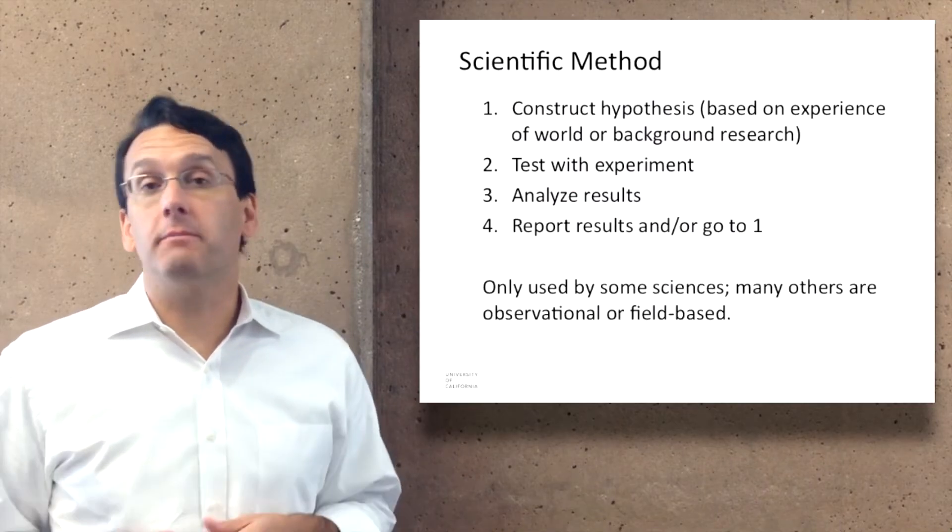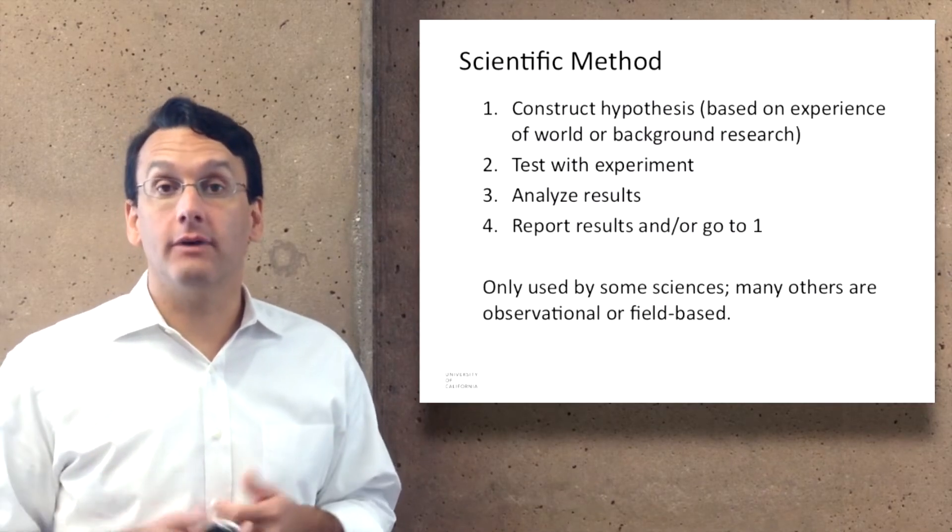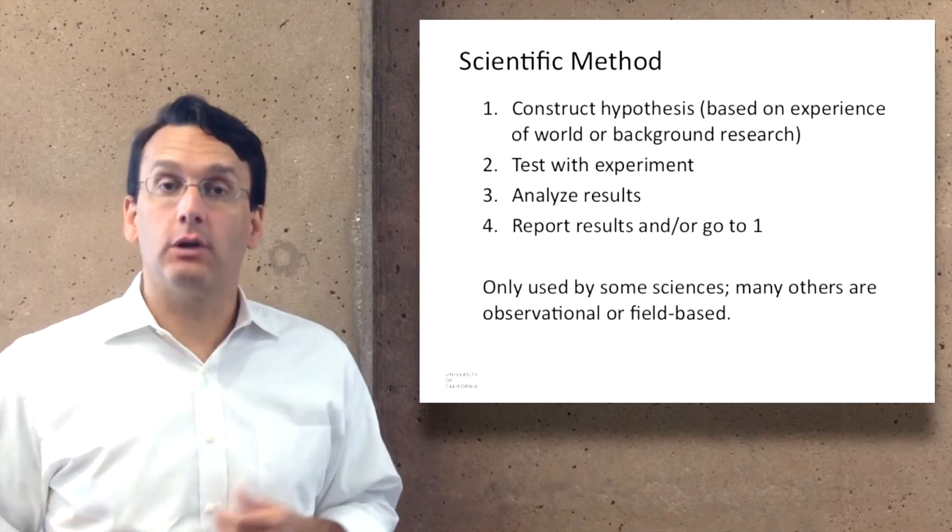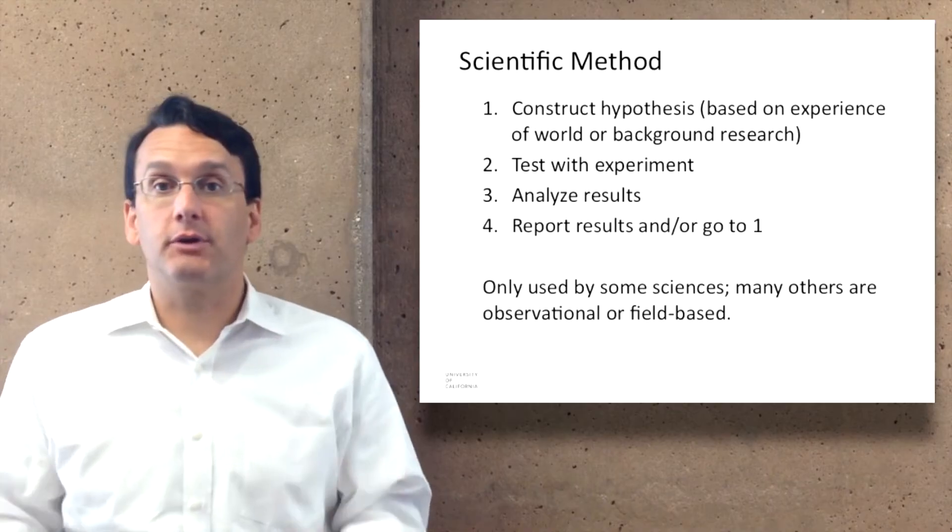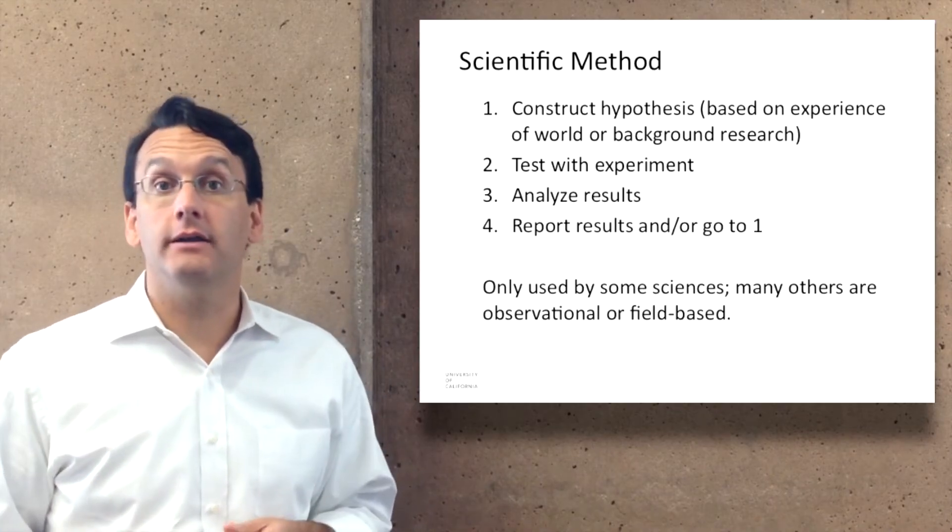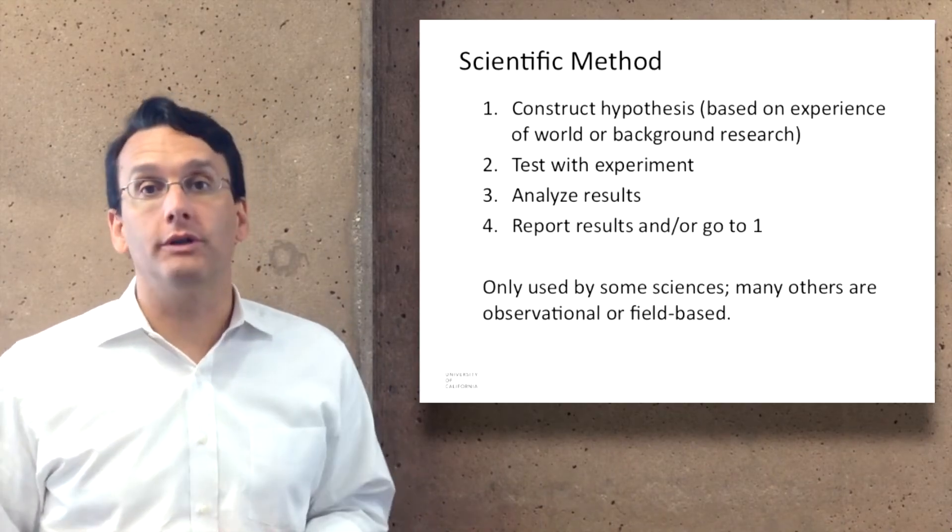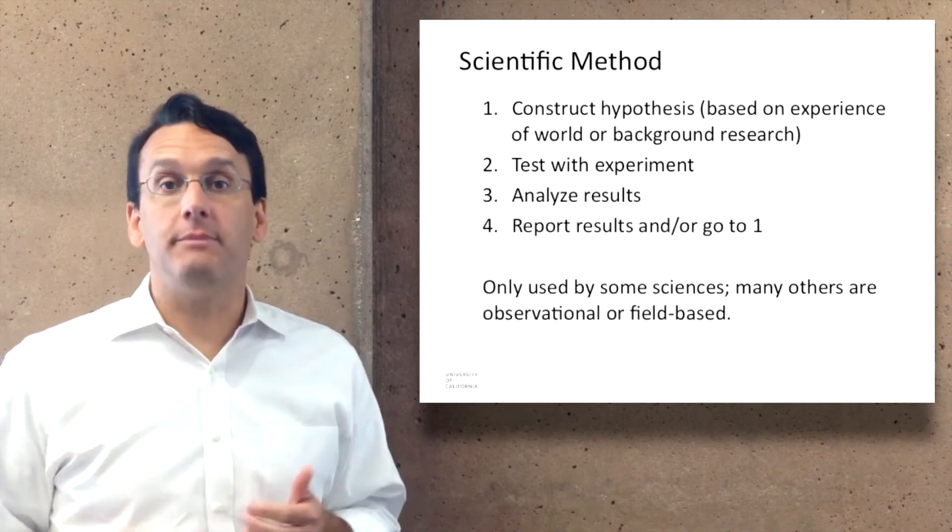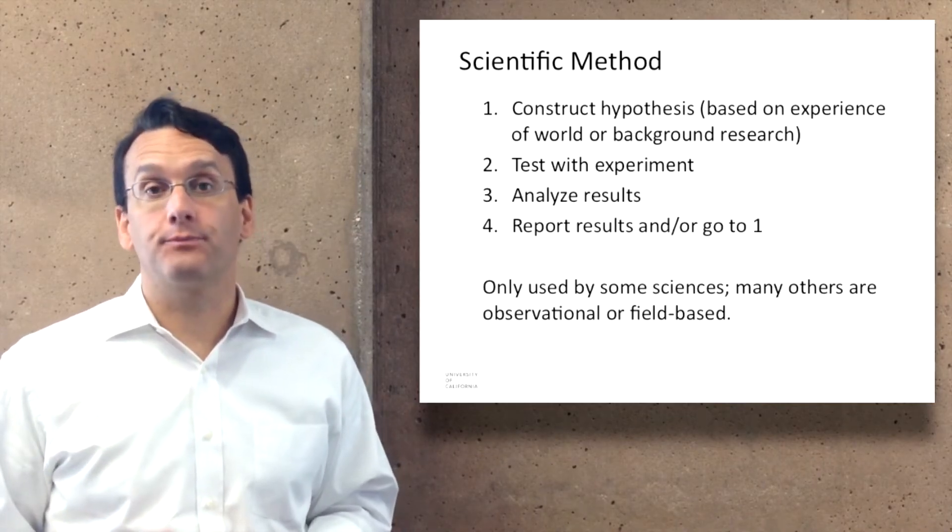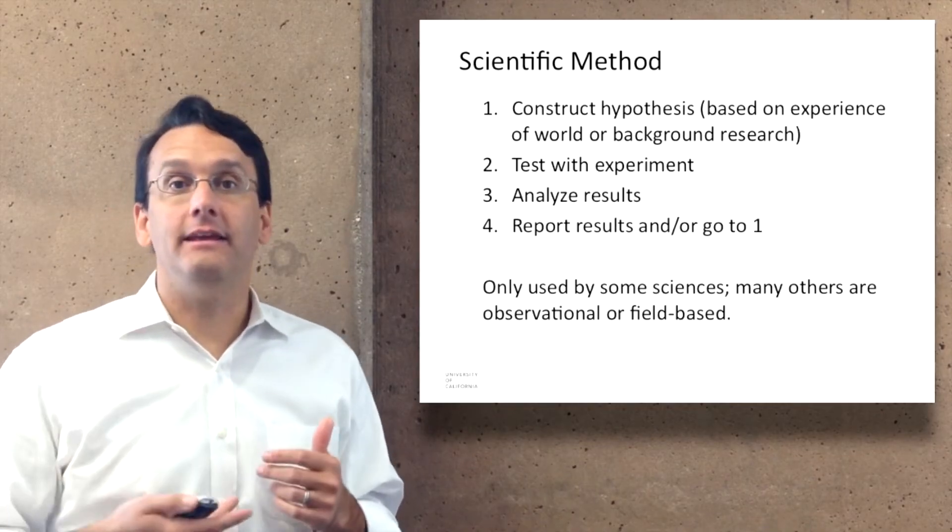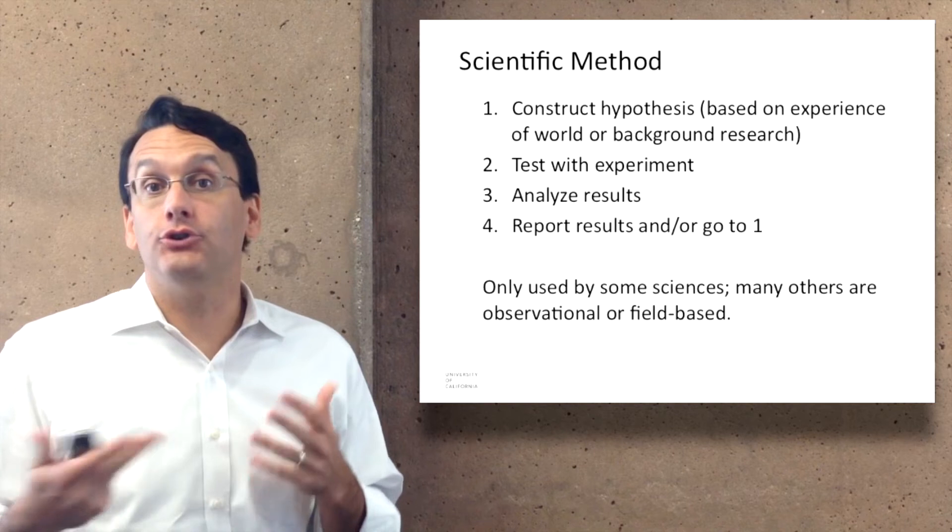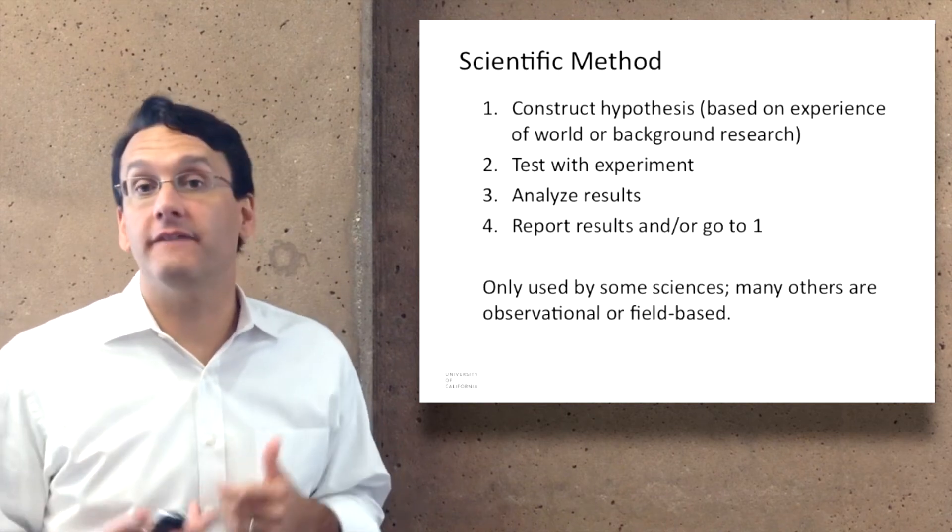The scientific method, which is one key aspect of a great deal of science, involves the following steps. First, you construct a hypothesis based on some experience of the world or background research, trying to figure out how you think the world is. The next step is you test that with an experiment. You create an experiment that tries to isolate the aspect of your hypothesis in a way that allows you to assess them effectively.